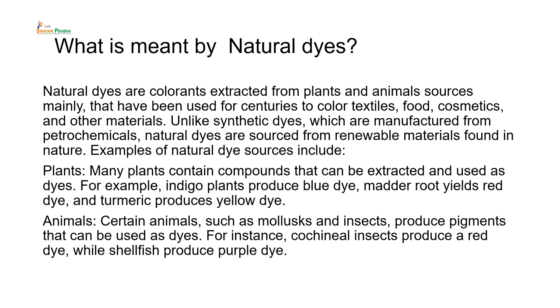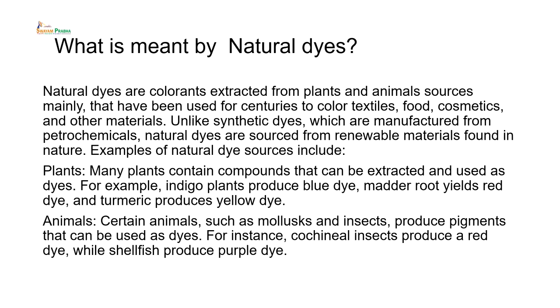Examples of natural dye sources include plants — many plants contain compounds that can be extracted and used as dyes. They are basically colorants present all around us; flowers, stems, and leaves are very intricately colored. For example, the indigo plant produces blue dye, madder root yields red dye, and turmeric, a common kitchen condiment, produces yellow dye.